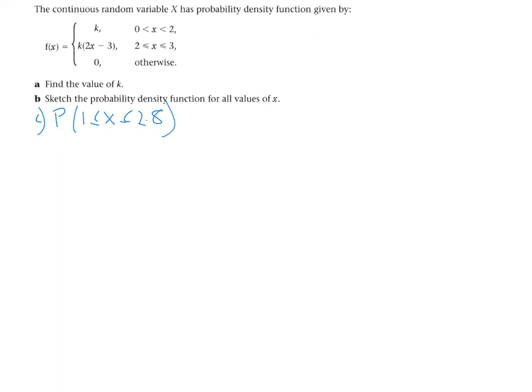So to find k, I'm going to firstly start by sketching our function. We know that it's between 0 and 2, it has a height of k. And then between 2 and 3, I'm going to substitute 3 into this second function. I'll get 3k, so the height at 3 is 3k.